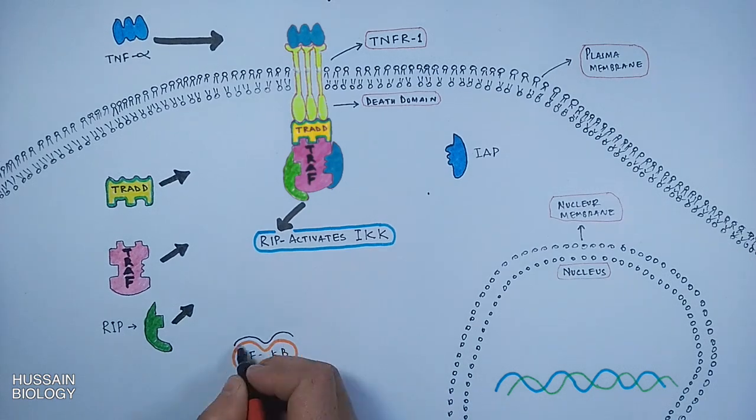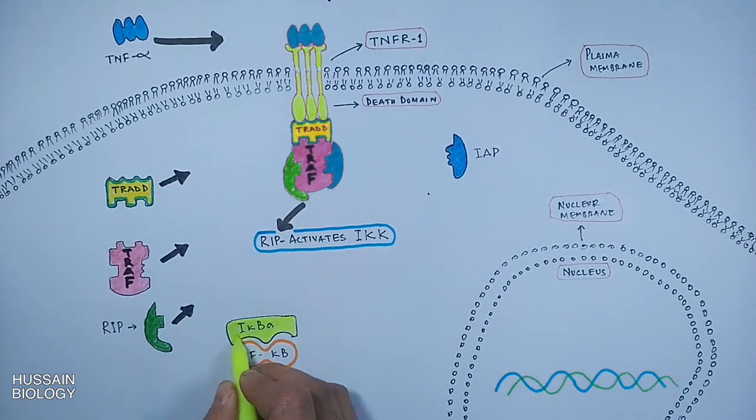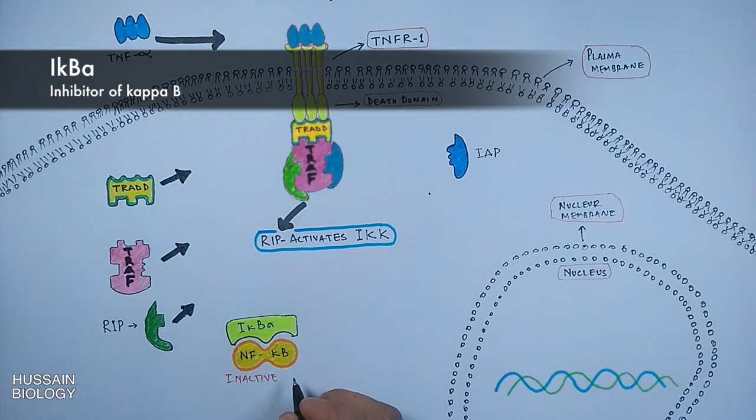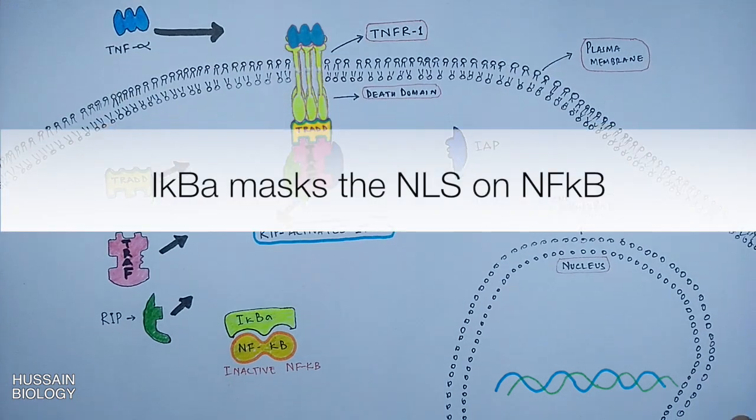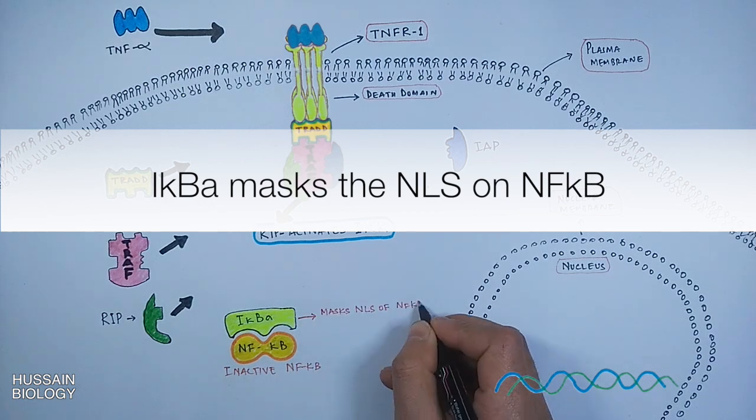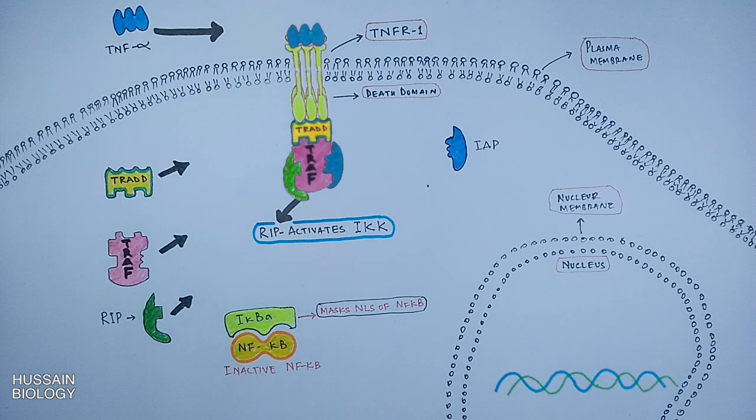On the other side, we have the NF-κB molecule, but it's rendered inactive by IκBα protein. The IκBα masks the NLS signal—nuclear localization signal—of NF-κB. So when the NLS signal is masked, it cannot be translocated to the nucleus.